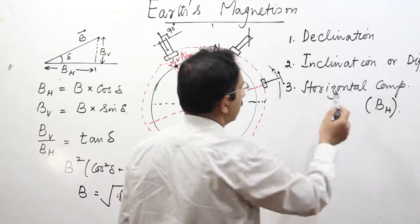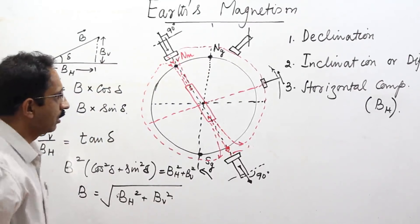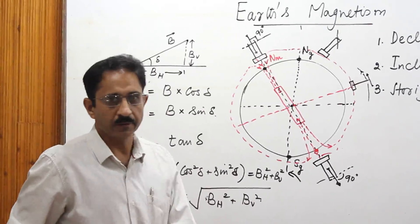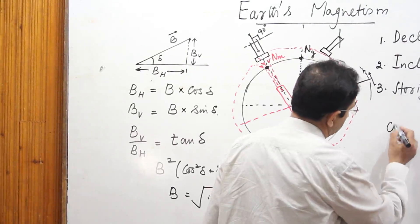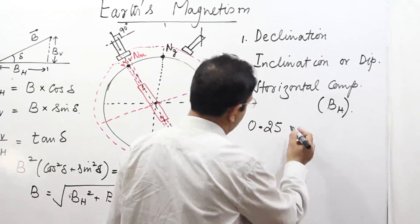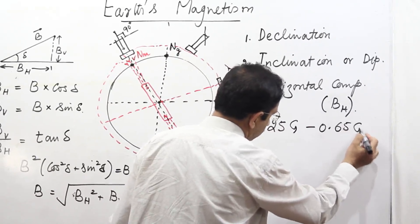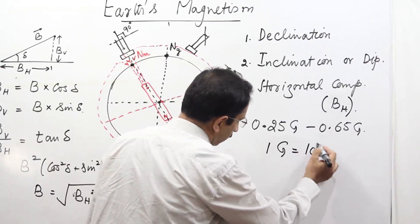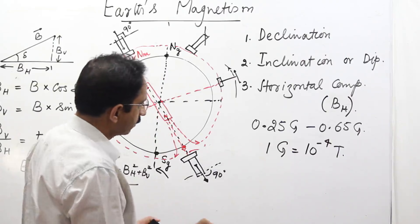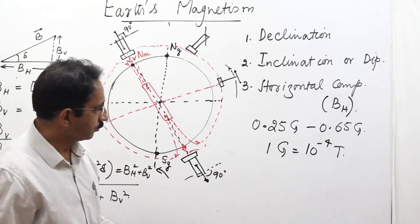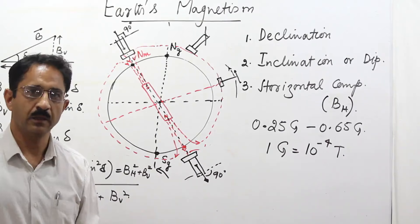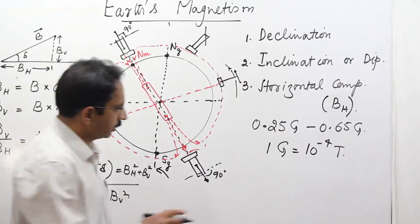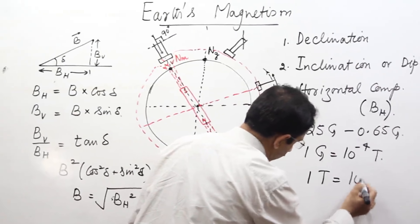So we have the three elements: declination, inclination, and horizontal component — the three quantities with which we can describe every property of the magnetic field at a given place. The typical value of magnetic field on the surface of Earth is about 0.25 gauss to nearly 0.65 gauss. Gauss is not the SI unit; the SI unit for magnetic field is the tesla, and one gauss equals 10⁻⁴ tesla. We can also express values in nano tesla — one nano tesla is 10⁻⁹ tesla, or about 10⁻⁵ gauss. One tesla equals 10⁴ gauss.